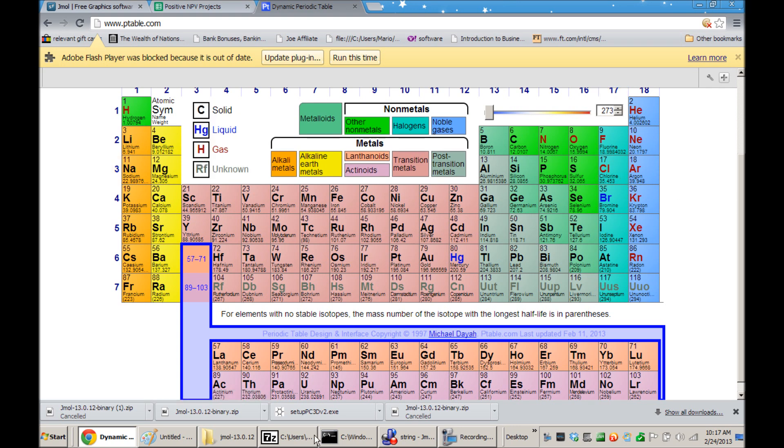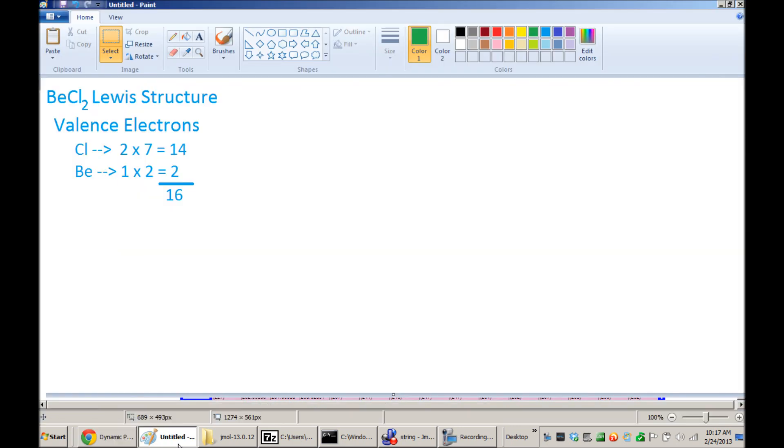We can count up the total number of valence electrons that will be present in the molecule by just adding those up. So there's two chlorines in the molecule, so it's two times seven. That's fourteen valence electrons that come from those chlorines. And beryllium has two valence electrons that it contributes to the molecule.